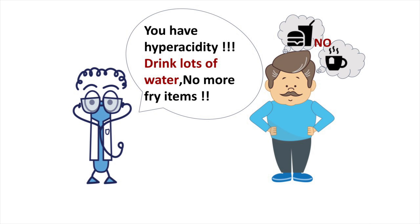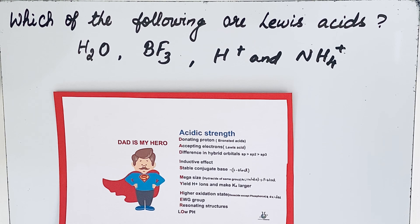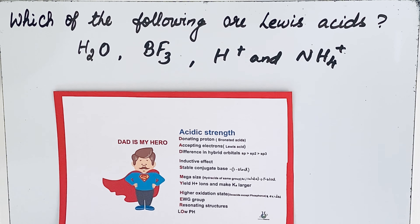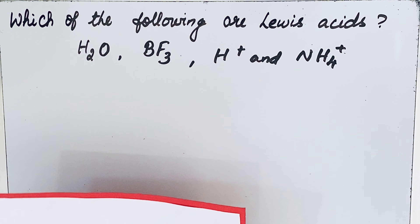Welcome to Aurora Chemistry for Everyone. Here we will see how to find Lewis acids from the given set of examples: which of the following are Lewis acids — H₂O, BF₃, H⁺, and NH₄⁺?